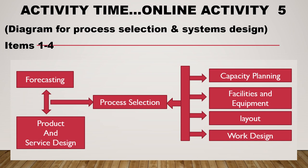This means you must first have a clear forecast of the demand of your product using any forecasting technique appropriate for your business, and you must be final with regards to your product and service design. Then you could proceed with process selection, and once you identify the steps and procedures for providing your products and services, you could proceed with capacity planning, facilities and equipment, layout, and work design.